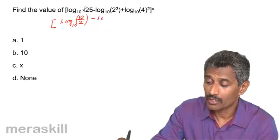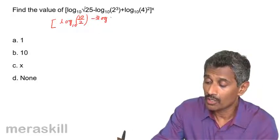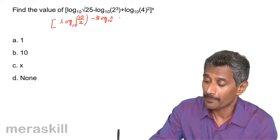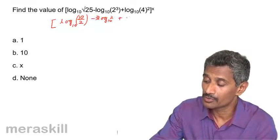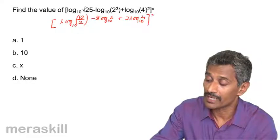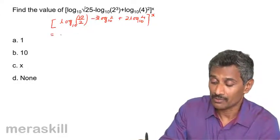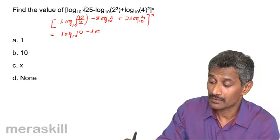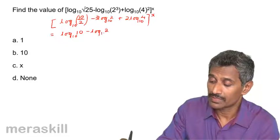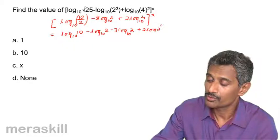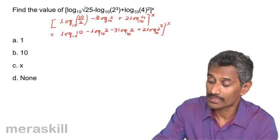This becomes: log(10/2) to the base 10, minus 3·log 2 to the base 10, plus log 4 to the base 10, the whole raised to x. Using log rules, this is log 10 to the base 10, minus log 2 to the base 10, minus 3·log 2 to the base 10, plus 2·log 2 to the base 10, all raised to x.